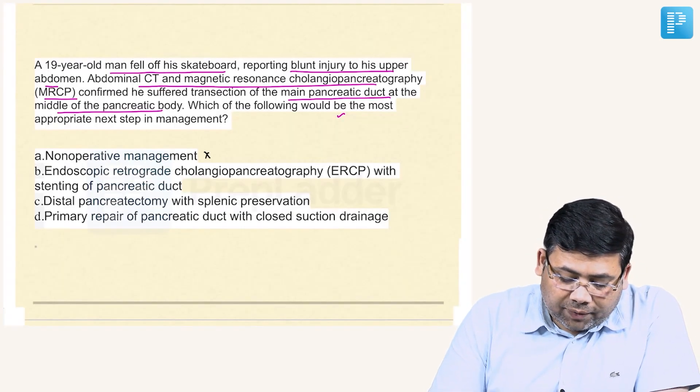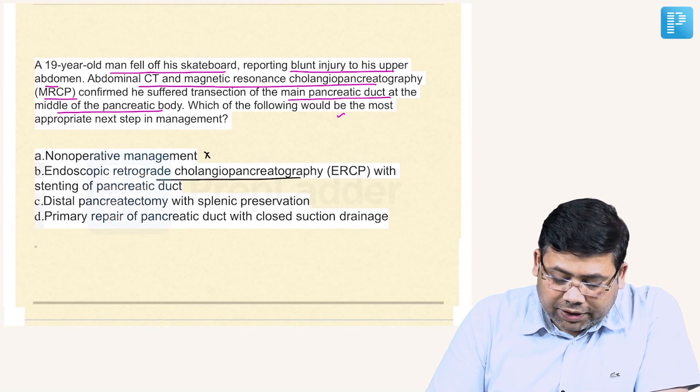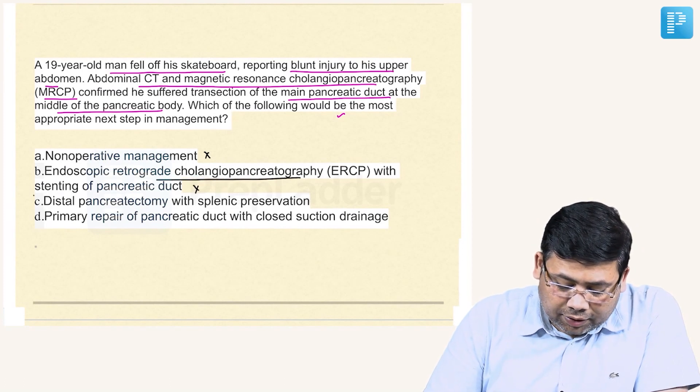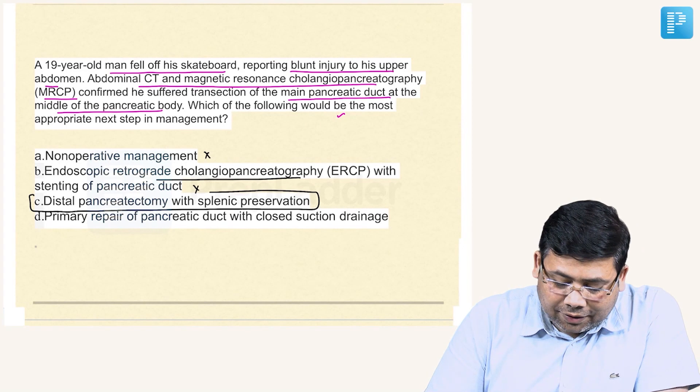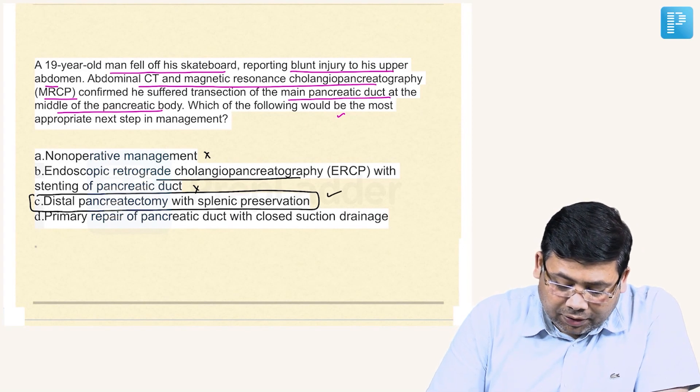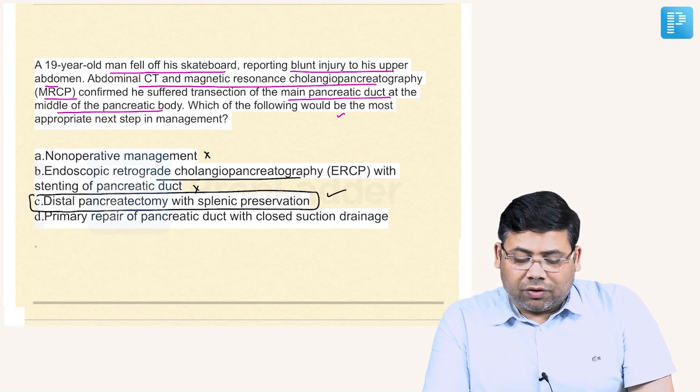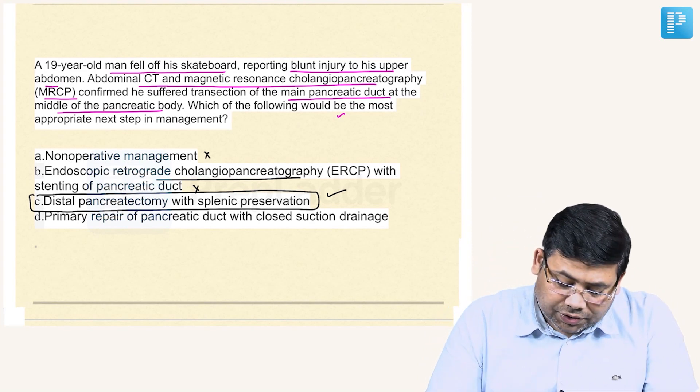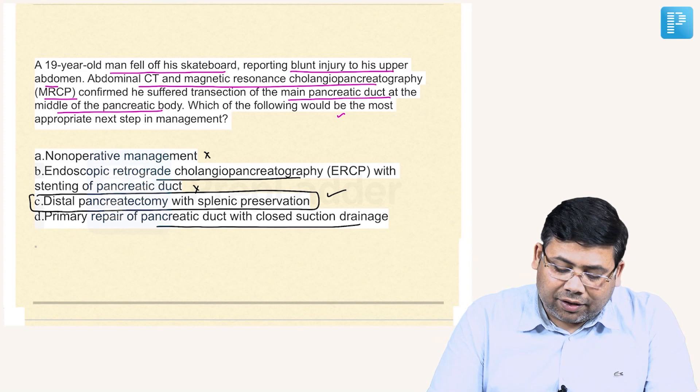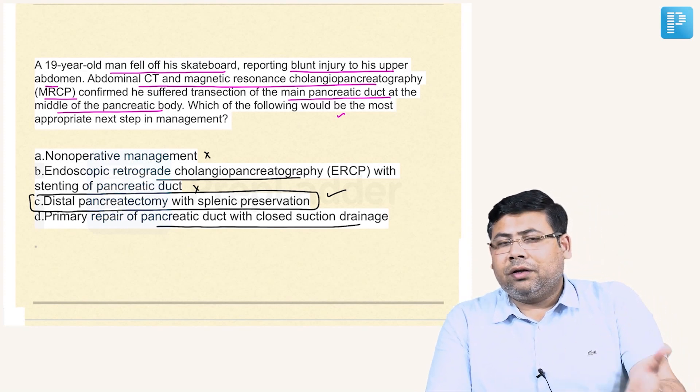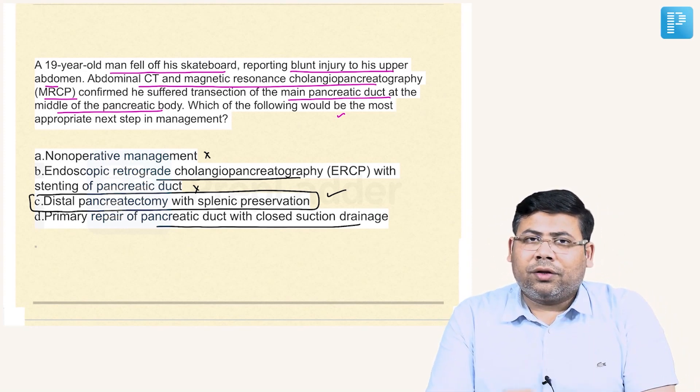So this is how the things are. If you go to this MCQ, non-operative management is absolutely wrong. Endoscopic stenting, no, absolutely wrong. The most preferred answer here will be distal pancreatectomy with splenic preservation or without. Here, since spleen is not involved, we will go for splenic preservation. Primary repair of pancreatic duct with closed suction drainage, no, it can be done for the smaller injuries.